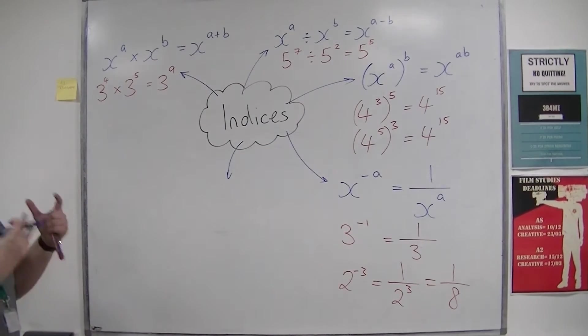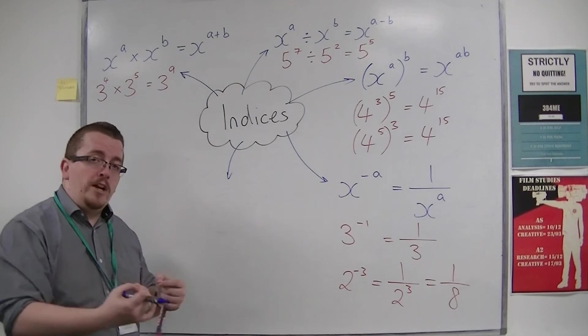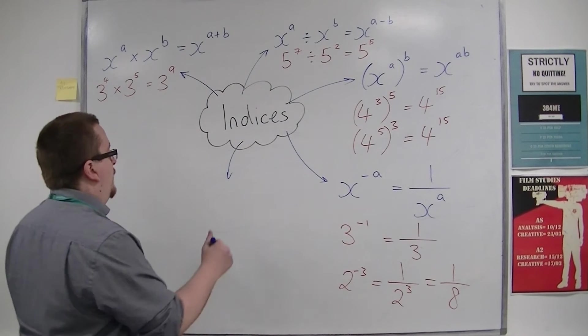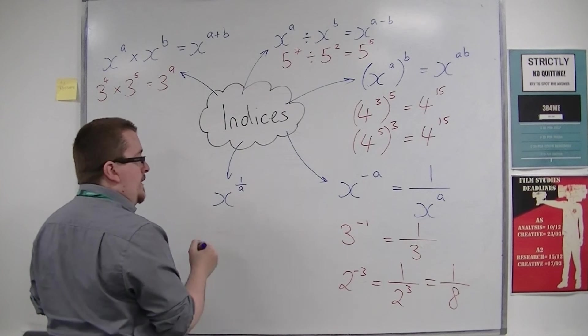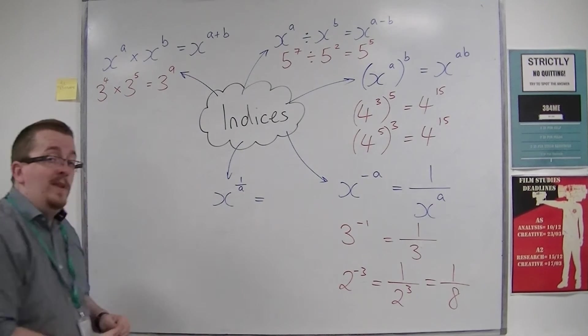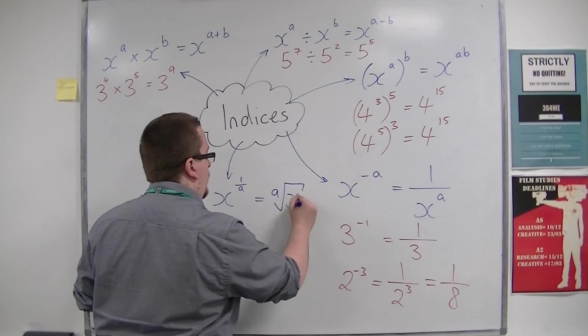When you've dealt with negative indices, you can deal with fractional indices. So x to the power of 1 over a refers to the ath root of x.